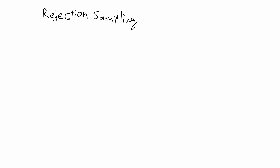In this video I want to go over how to do rejection sampling, which is also known as the accept-reject method or accept-reject algorithm. This is one type of Monte Carlo random sampling method. I want to first introduce the algorithm and the concept behind it and then do an example in R and by hand afterwards.